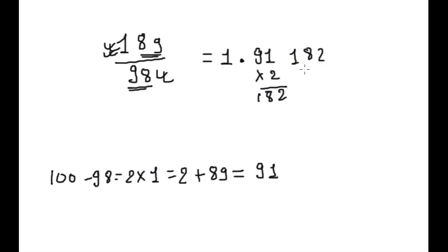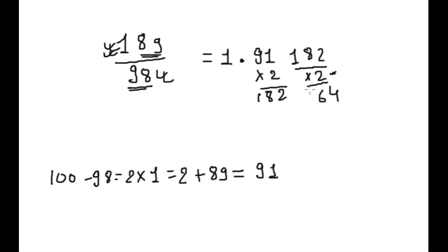Now we can see we are getting a 3-digit number, however it should be 2-digit. So we will do one more step: multiply by 2 — again because 98 is 2 less than 100 — giving 4 and 3, so 364. We write this here. Now one more step: we will do addition of the last digits.